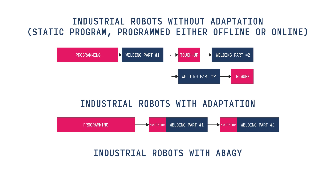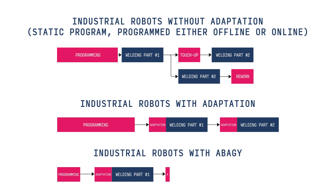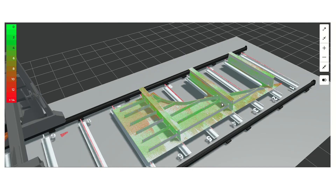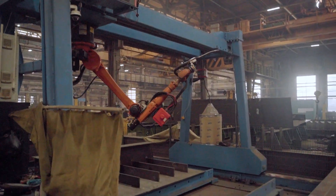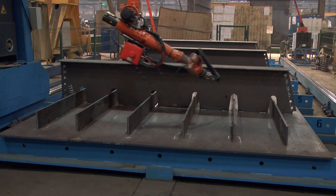If you're using Abadji, an additional benefit is the simplicity of the initial programming, which takes significantly less time compared to conventional ways of programming, because the adaptation and all robot movements are calculated automatically — it will take minutes instead of hours. Furthermore, the adaptation procedure provided by our software is not only automatically generated, but also more advanced and can compensate for a wider range of deviations compared to standard adaptation procedures.